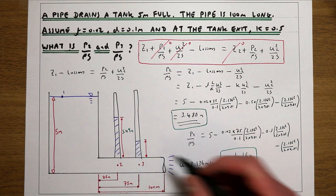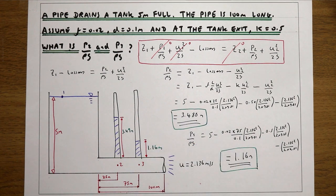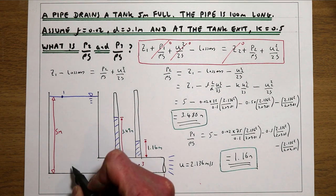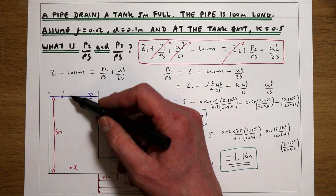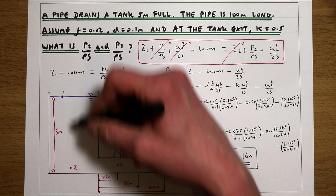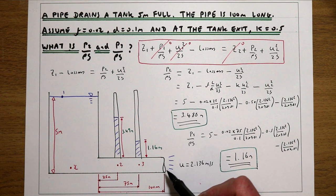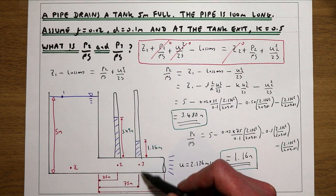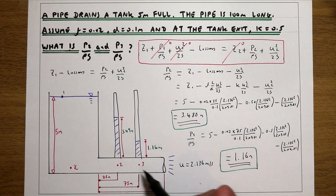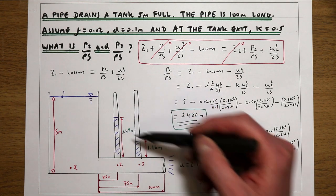So our pressure at point 3 is 1.16 metres. What we can see is that as we go down this pipe we're losing energy, which causes the pressure to drop. At the base of the tank we start with 5 metres of pressure head; 25 metres down the pipe it's 3.49 metres; at 75 metres down the pipe it's 1.16 metres. We're losing pressure continuously due to friction losses in the pipe. This is how you would work out the pressure at any point along the pipe.